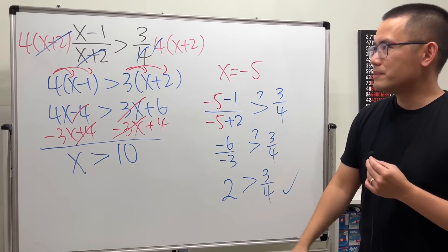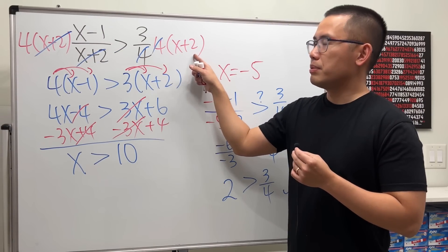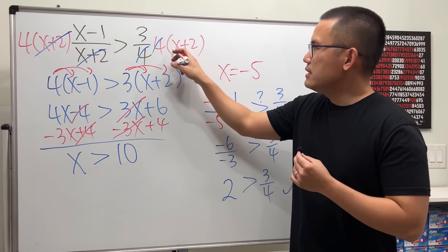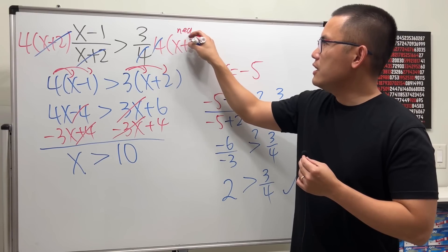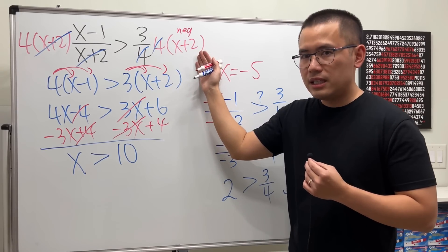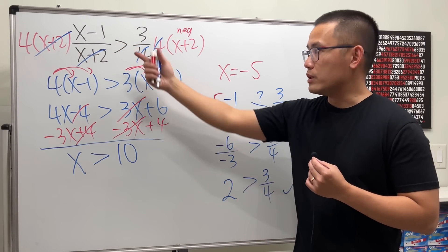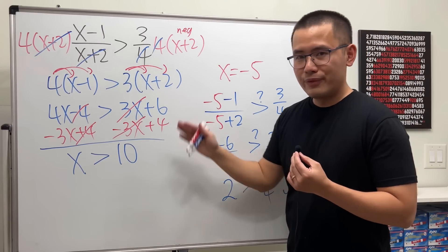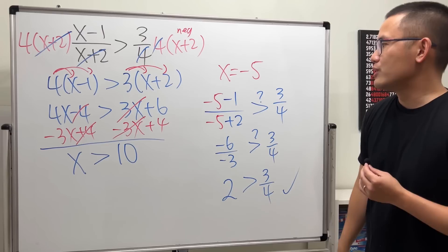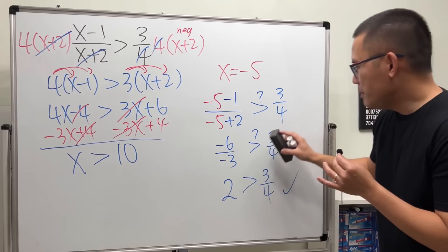Here is the deal: notice how we multiplied both sides by x plus 2, and we didn't know what x was. If x plus 2 happens to be negative, then whenever we multiply both sides by a negative number we have to switch the inequality — but we didn't do that at all, which is why we didn't get the whole solution.